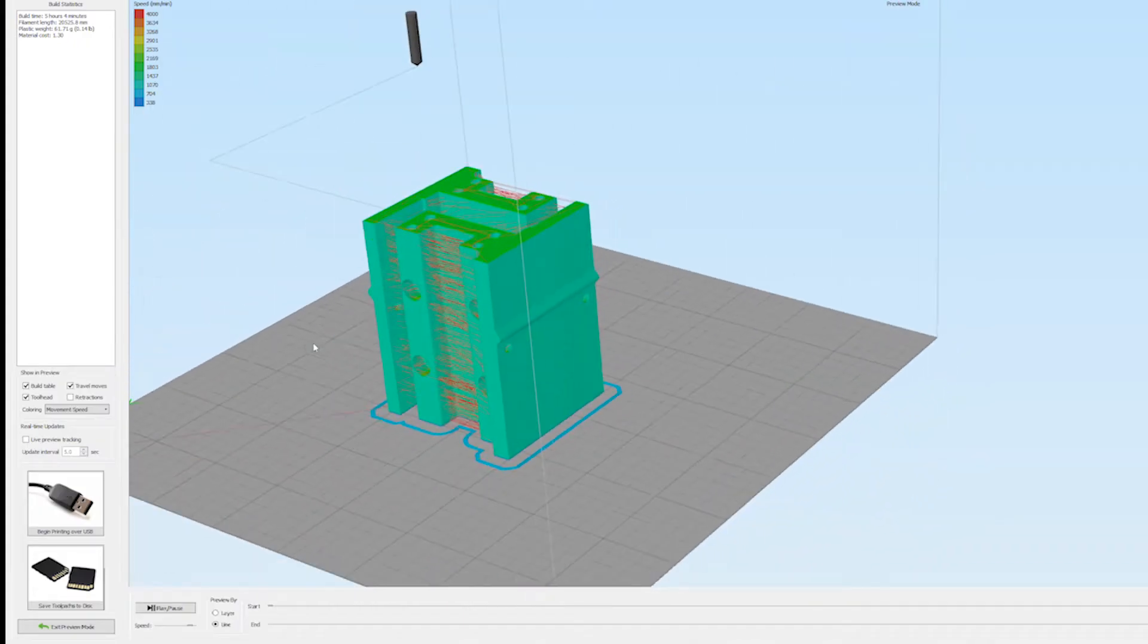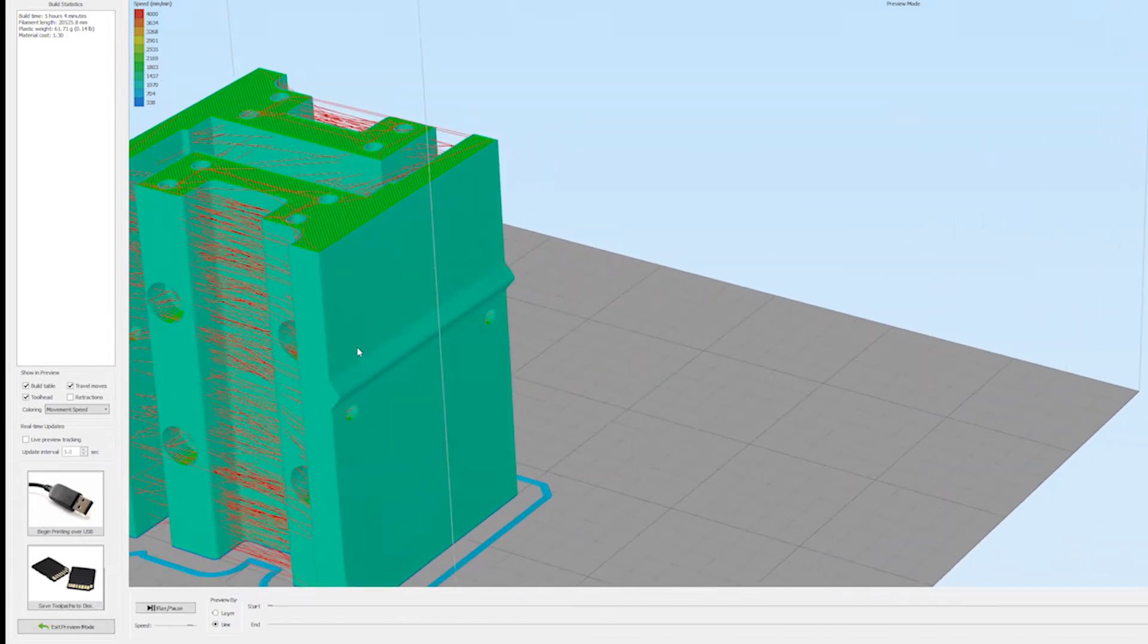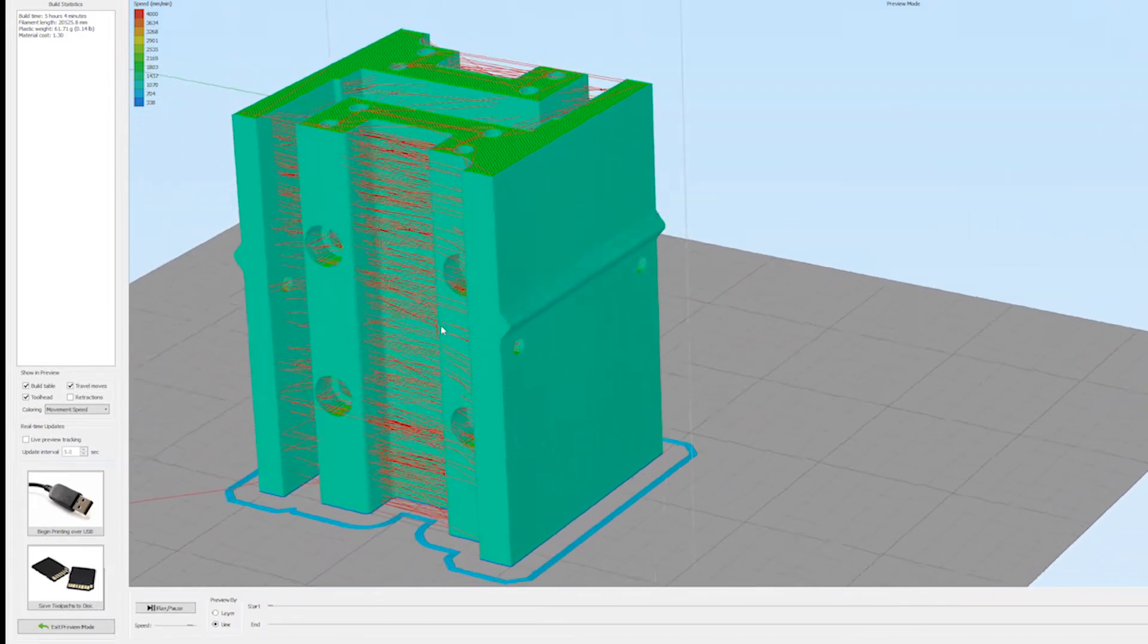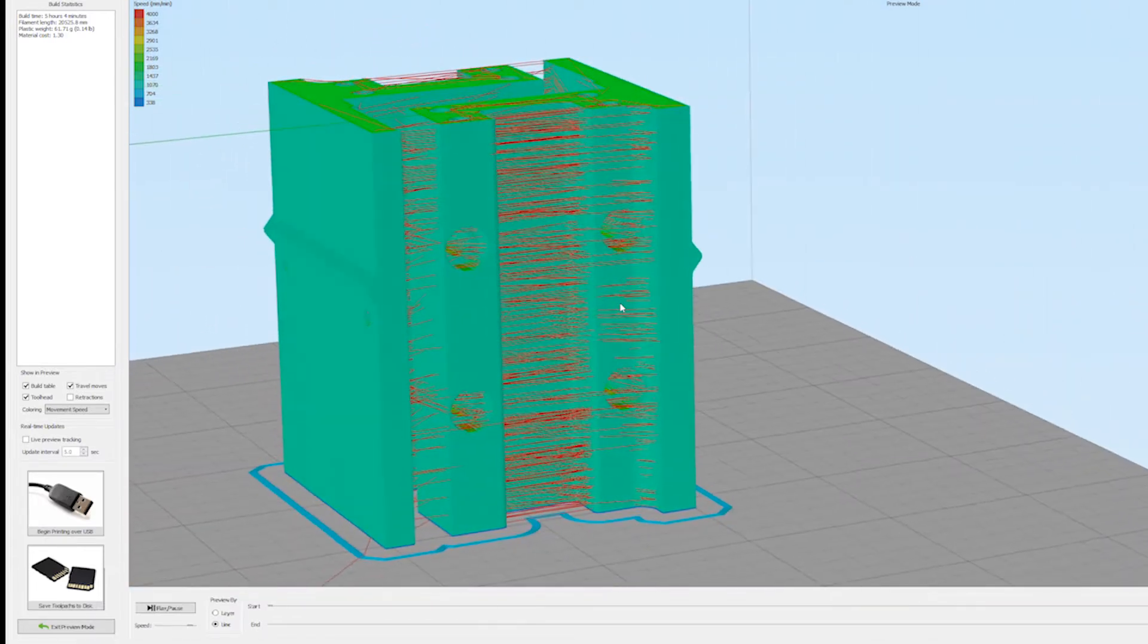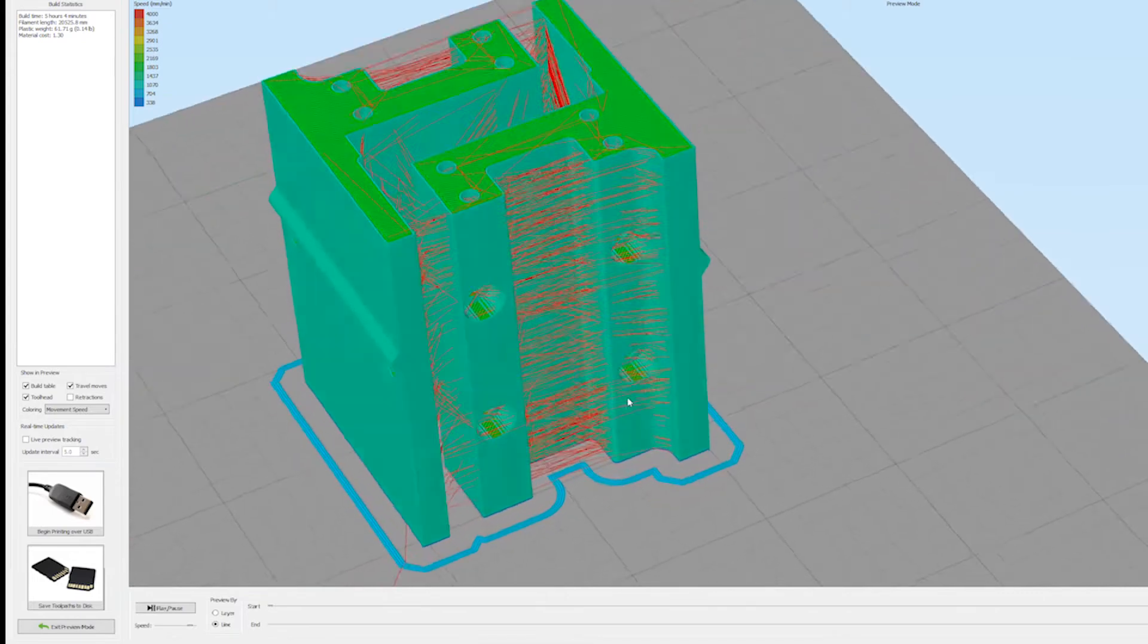I used the same settings for all the parts, with one exception, the tube holders. That part required me to add some small amount of support material on the bottom section of the part.